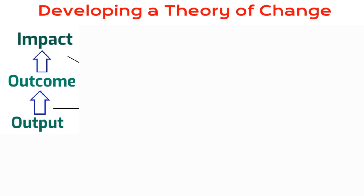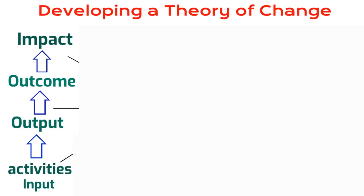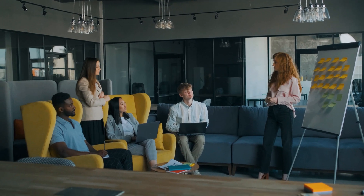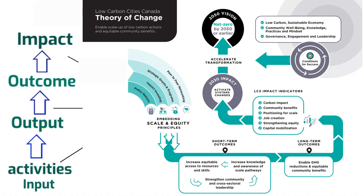Next, we outline the outputs and activities required to achieve these outcomes. Outputs are specific products or services that emerge as a result of an activity. Activities are the specific actions that we take. We then identify the resources and inputs needed to implement these activities, including time, money, and human resources. By mapping these connections, we create a visual representation of the theory of change, making it easier to communicate and understand. It is important to think about and record both intended and unintended results that may occur, to make our theory of change more comprehensive.